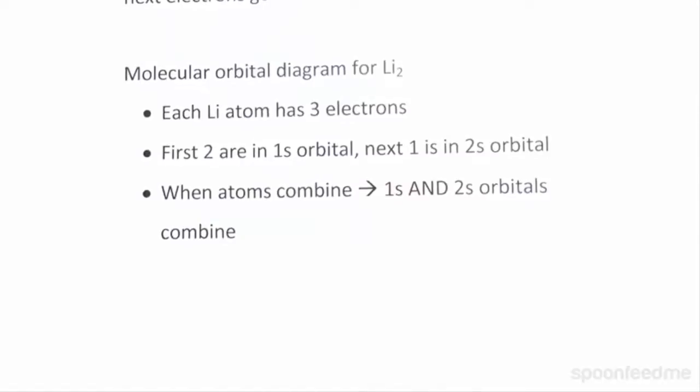So when we have lithium atoms come together, just as the 1s orbitals combine, so do the two 2s orbitals. We know that the 1s and the 2s orbitals are occupied in a lithium atom. So when the 1s orbitals combine, the 2s orbitals also combine. I'm going to draw this out for you.